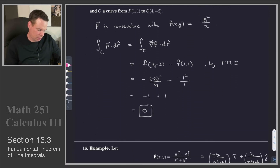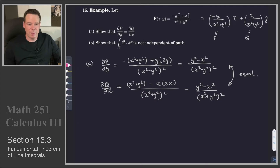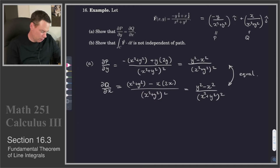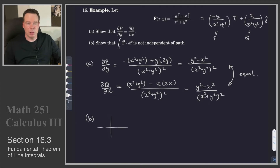Do we have that in this case? Apparently we don't, because part (b) is asking us to show that the integral is not independent of path. If I can show that, then I know it's not conservative, because if a vector field is conservative these line integrals must be path independent. So let's work on part (b) and show that these line integrals are not independent of path by constructing two paths with the same initial and terminal points that give different values.